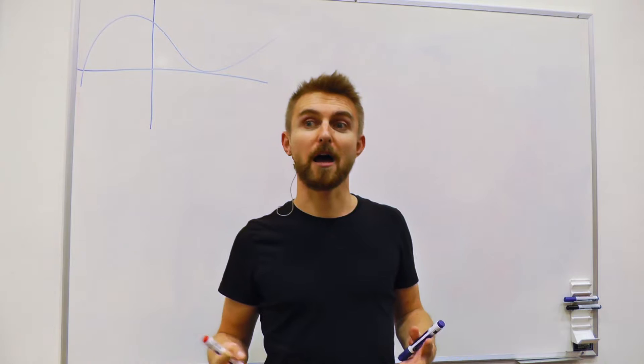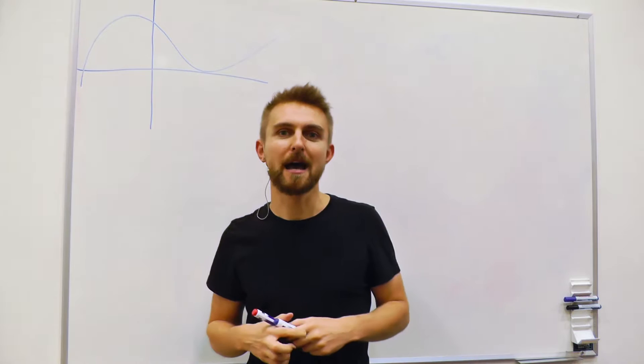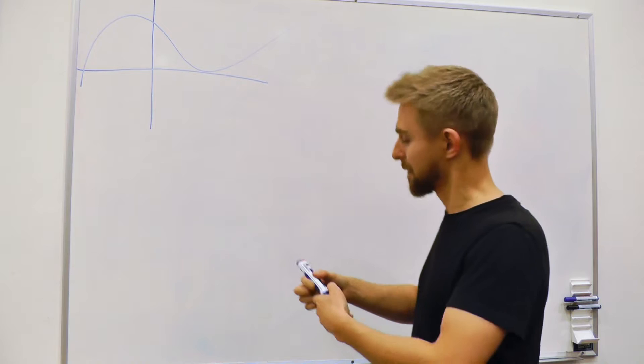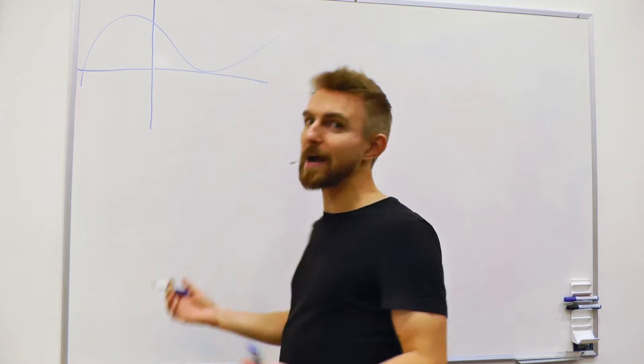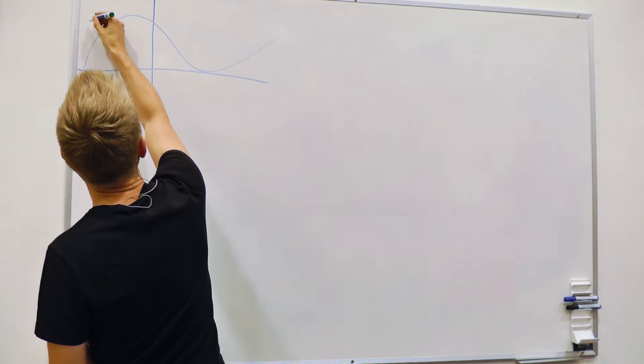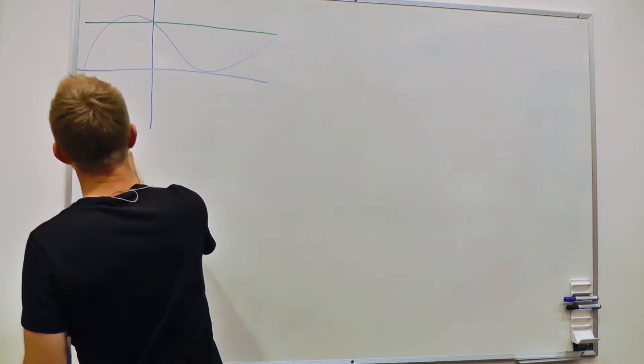So we're going to take the first piece of information, which is just the value of the function at x equals 0, and construct what we call the zeroth order approximation. As the name suggests, it's not going to be very good. We've only got one piece of information, so all we can actually do is draw a horizontal line. If we know the y-value of the function at one point, we're going to have to assume that the function has that y-value everywhere. Our zeroth order approximation just looks like the green line there — not very good.